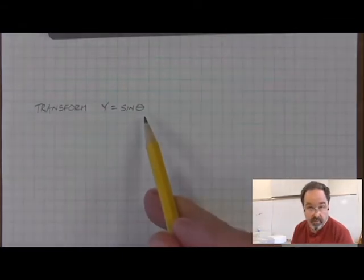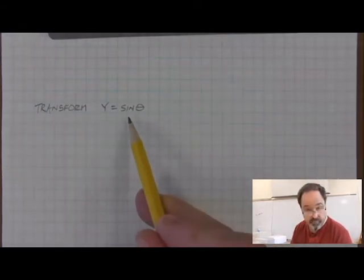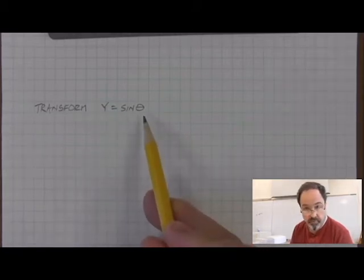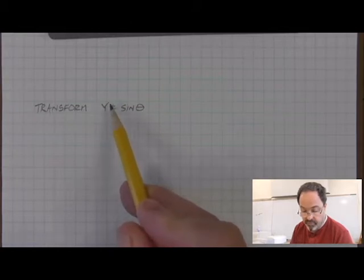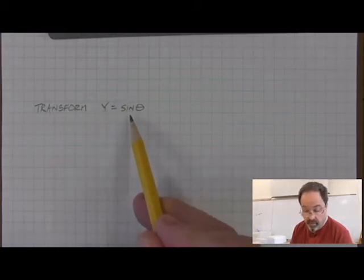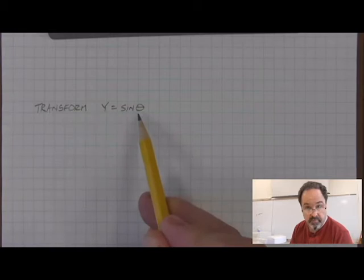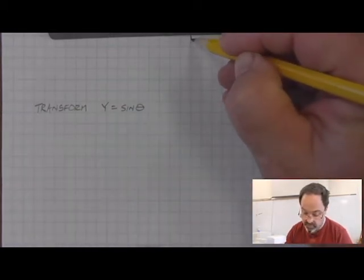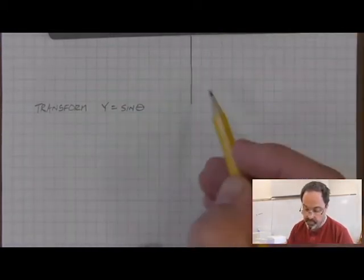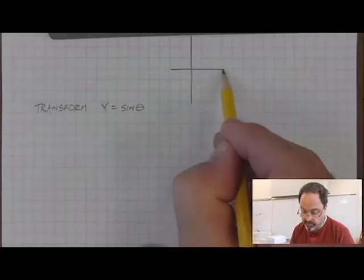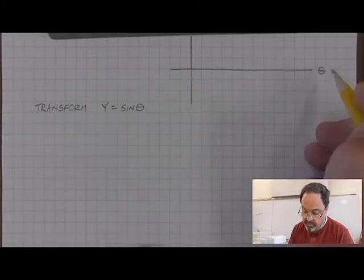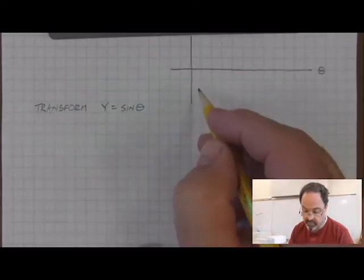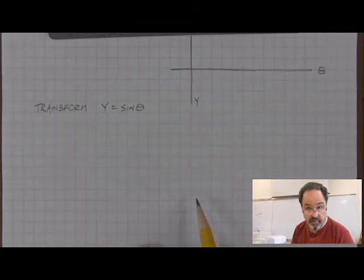Theta is an angle, sine is a function — it's one of the trigonometric ratios — and we put it in equation form so that the y-axis, the vertical axis, will be found by taking the sine of angles. To remind us what sine looks like and where it comes from, let's look at a graph where the horizontal axis is theta and the vertical axis is y, found by taking the sine of theta.